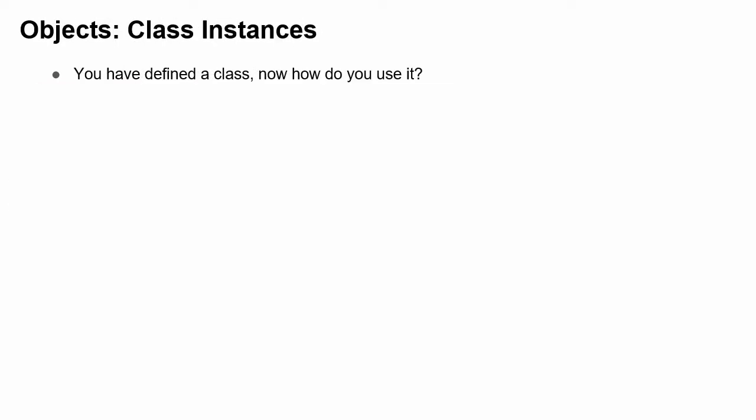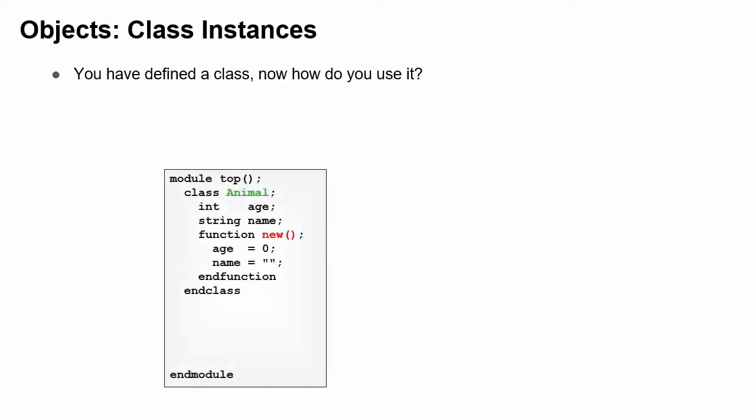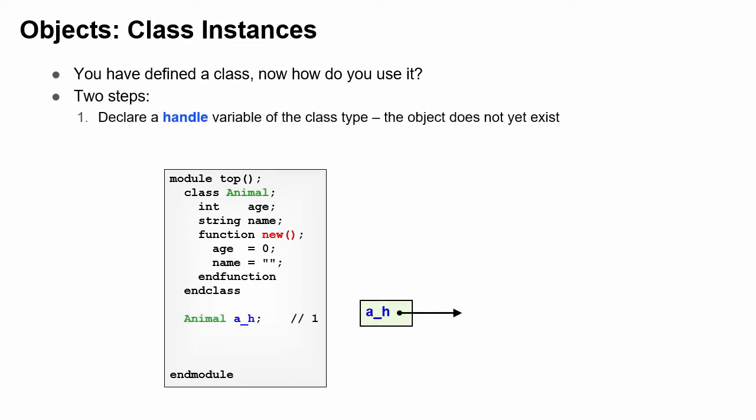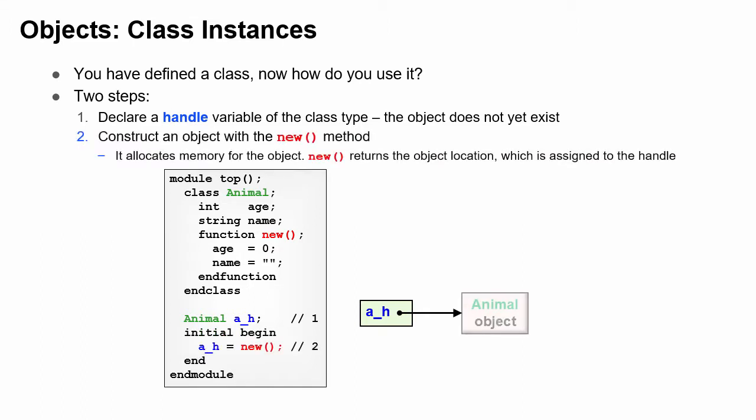How do you use the animal class? So here's the animal class defined inside of a module. First, you need a handle of type animal a_h. Initially, it is null and doesn't point to anything. Second, you need to create an animal object by calling the constructor.